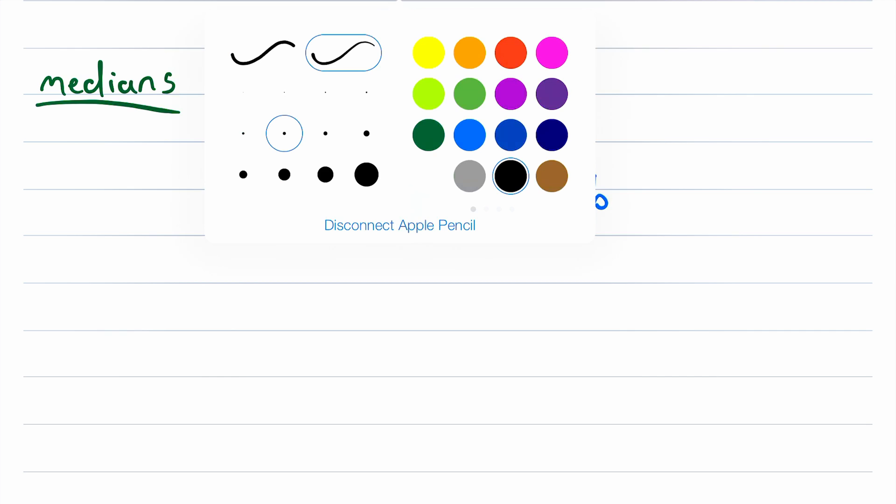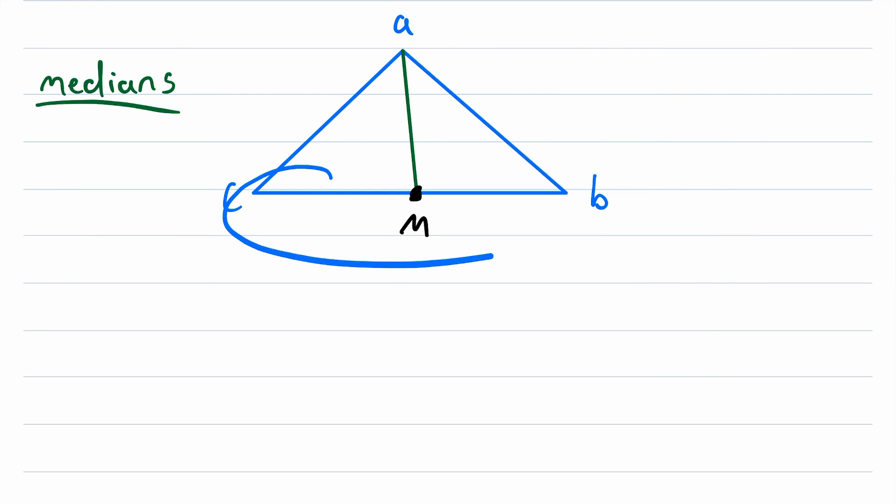we know that the median bisects this line segment, which means that this piece over here on the left is congruent to this piece on the right. So CM is congruent to MB.